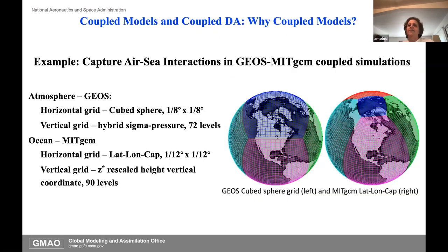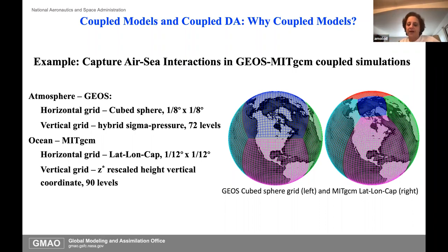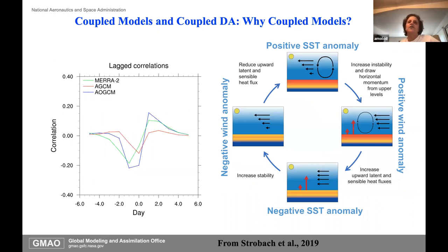Now, a few ideas about coupled models and coupled data assimilation. The first question from my point of view: I'm going to show you an example of why we need coupled models to do sub-seasonal or seasonal prediction. Here's an example of a very high-resolution simulation with the GEOS atmosphere coupled to the MITgcm, with the specs for the resolution we ran this at.